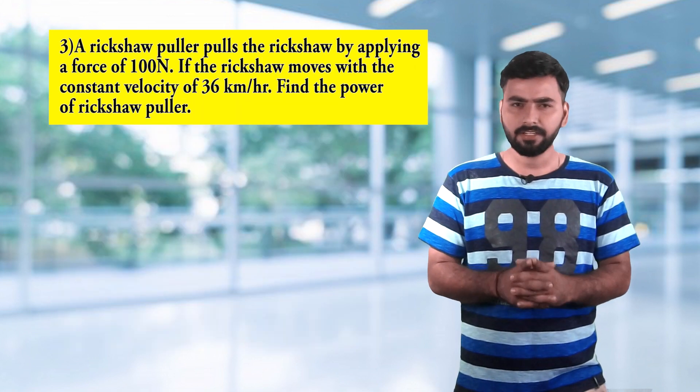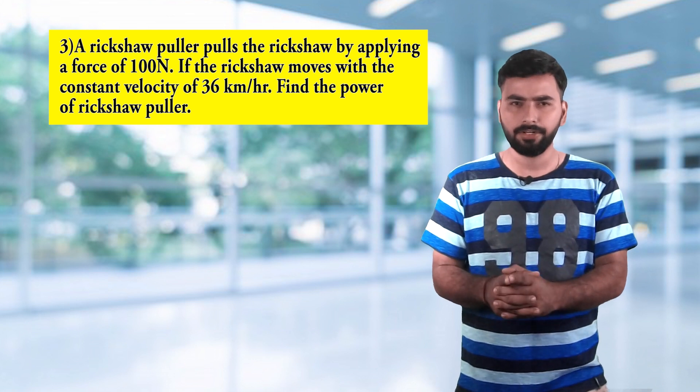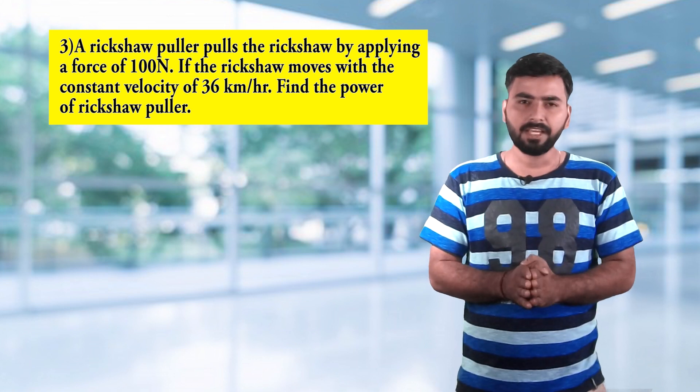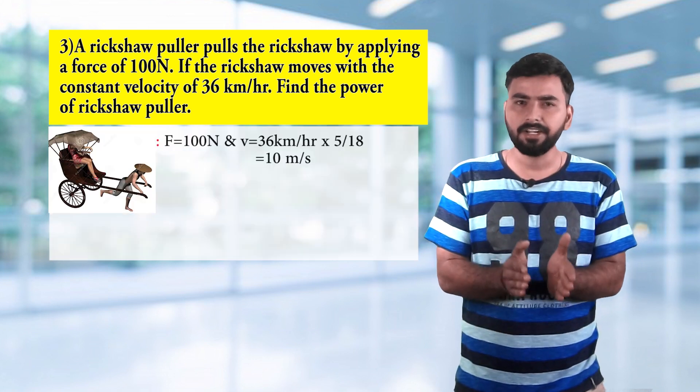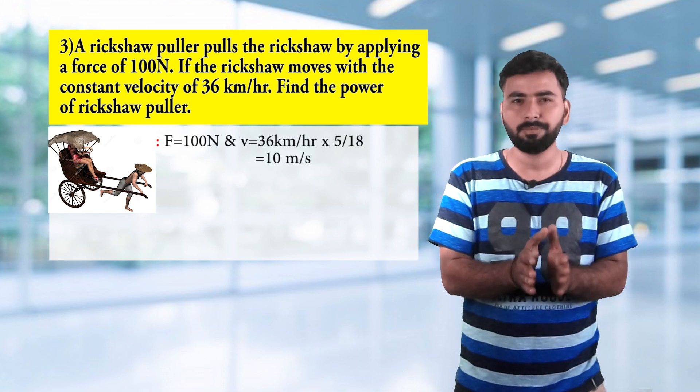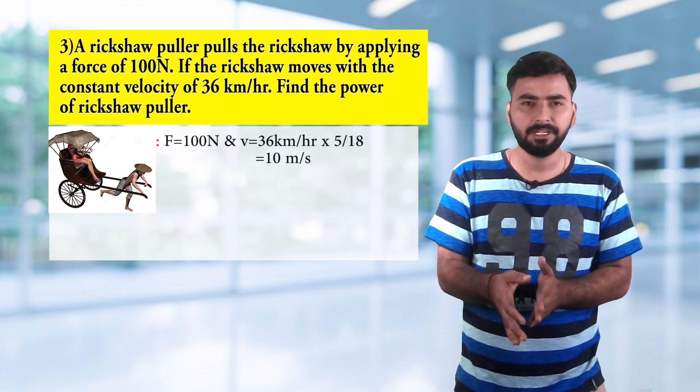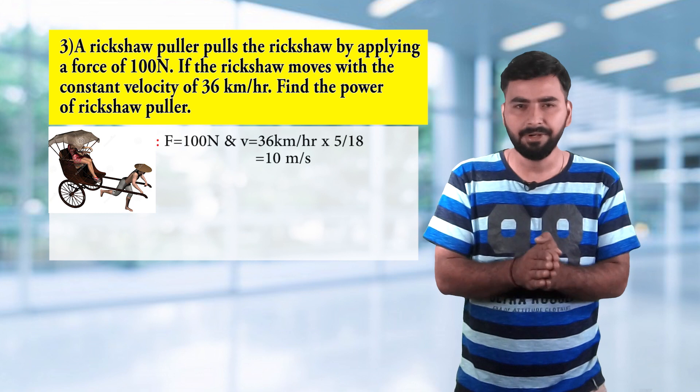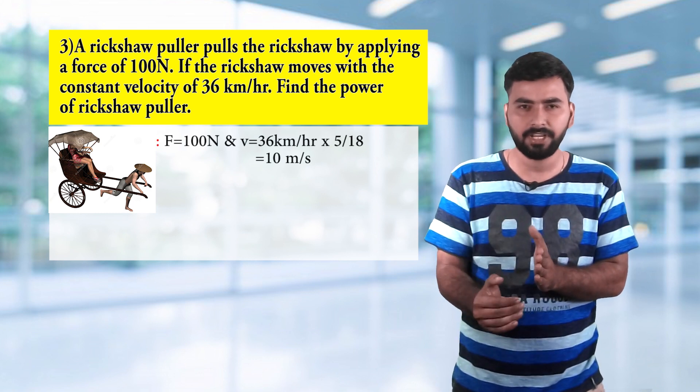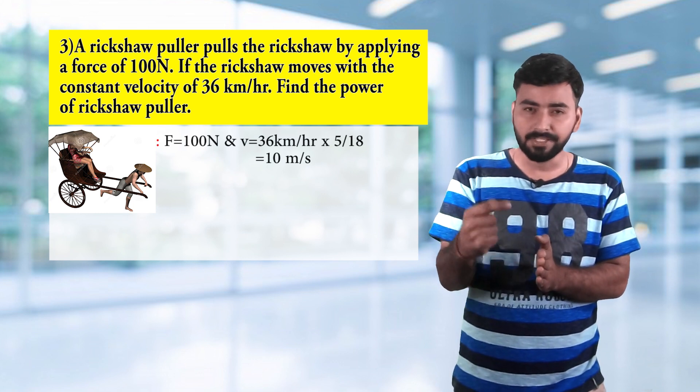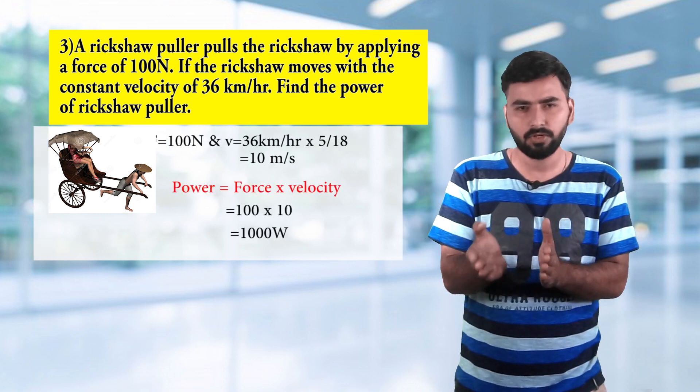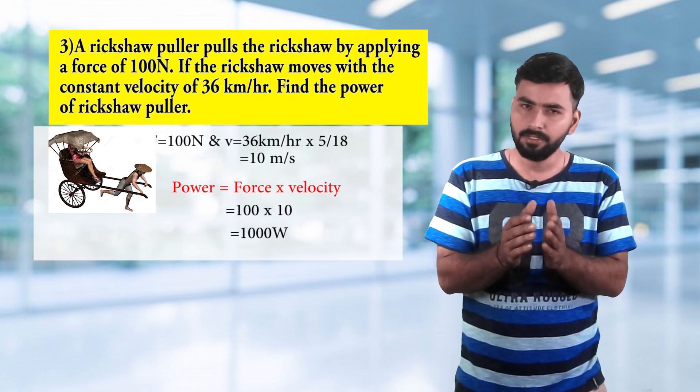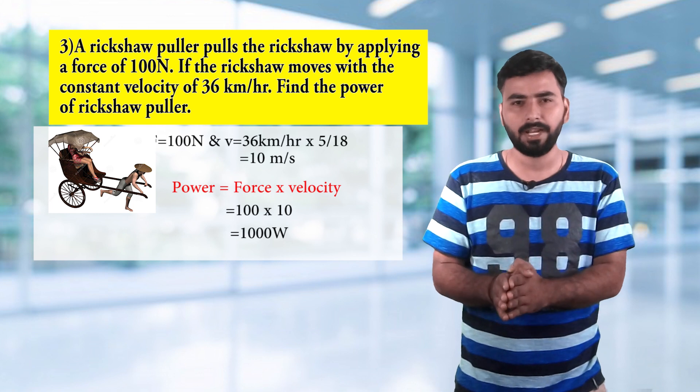The third question is: a rickshaw puller pulls a rickshaw by applying a force of 100 Newton. The rickshaw starts moving at a constant speed of 36 kilometers per hour. We need to calculate the power of the rickshaw puller. Converting 36 km/h to meter per second by multiplying 5 by 18, we get 10 meter per second. Power formula is work upon time, which is force into displacement, and displacement by time is velocity. So power becomes force into velocity, that is 100 Newton into 10 meter per second, which equals 1000 watt.